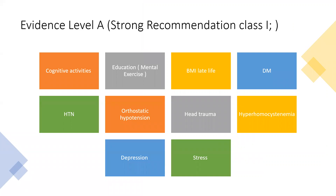Evidence level A risk factors or preventive aspects are supported by well-conducted RCTs and are strongly recommended — that is, class 1. These include cognitive activities, good educational achievement, low BMI in late life, and lack of diabetes mellitus or well-controlled glycemic index as preventive aspects, while the presence of diabetes mellitus is a risk factor. Hypertension is a risk factor, while normal blood pressure can be considered a preventive aspect.